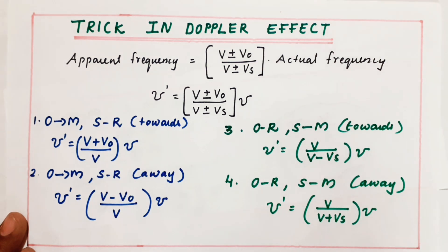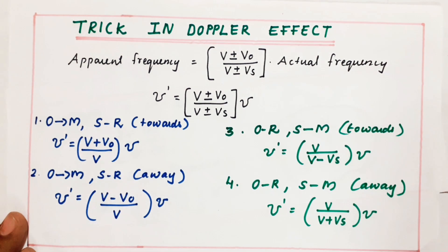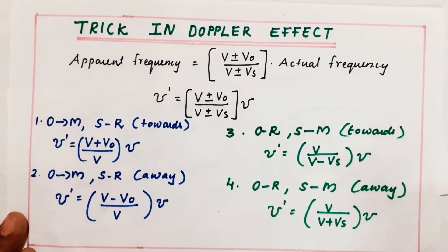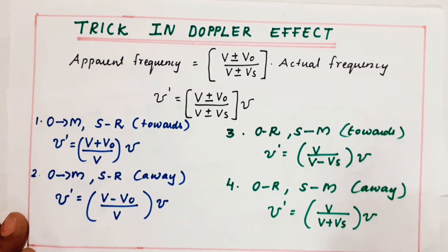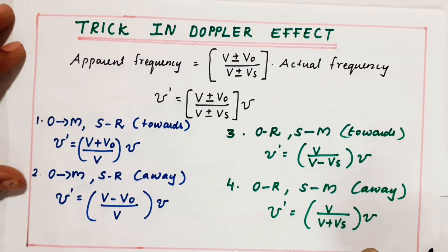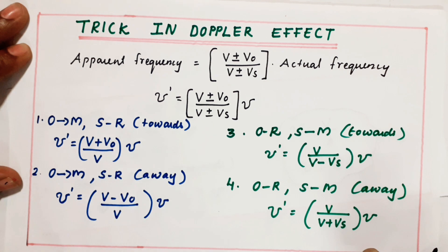Before going to the tricks, what is the Doppler effect? The apparent change in the frequency due to the relative motion of source or observer or both. When the source is moving with respect to the observer, or the observer is moving with respect to the source, or if both are moving, there will be some change in frequency. This phenomenon is called the Doppler effect.